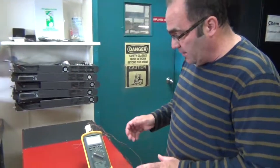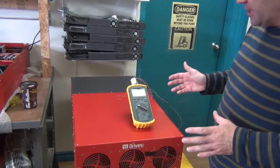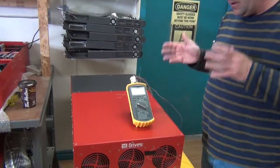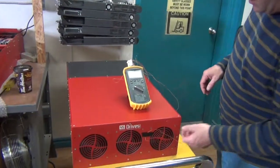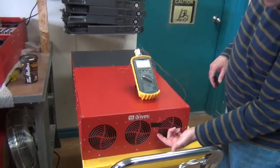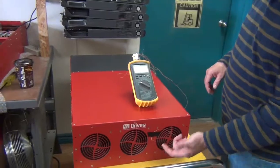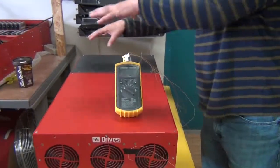What we have is an Omega HH501DK temperature reader with four thermocouples. One thermocouple, our T1, is here and it's the ambient temperature outside, and then the other four are strategically placed inside the unit.